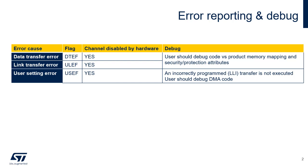Data transfer error, link transfer error, user setting error. In all three cases, the channel encountering the error is automatically disabled by the DMA controller. All these errors can be reported to the Cortex-M33 core through an interrupt request.